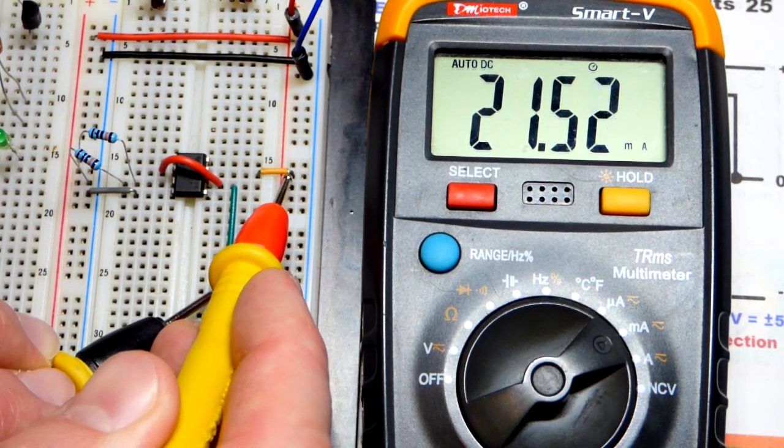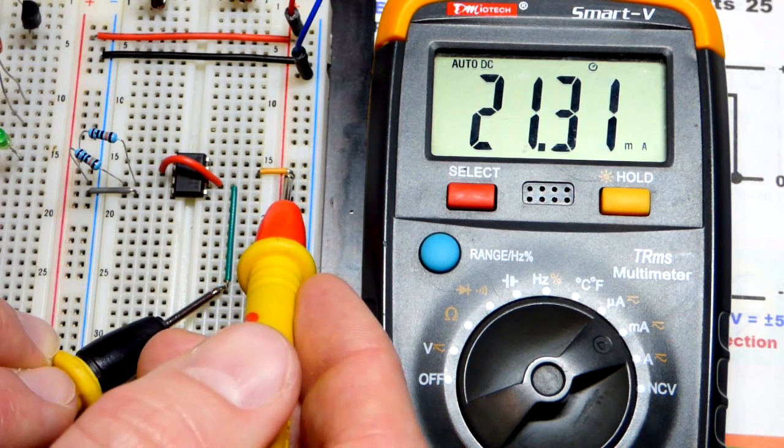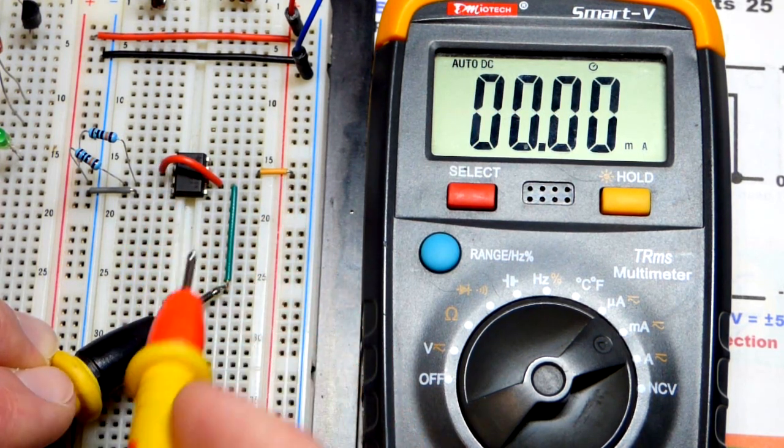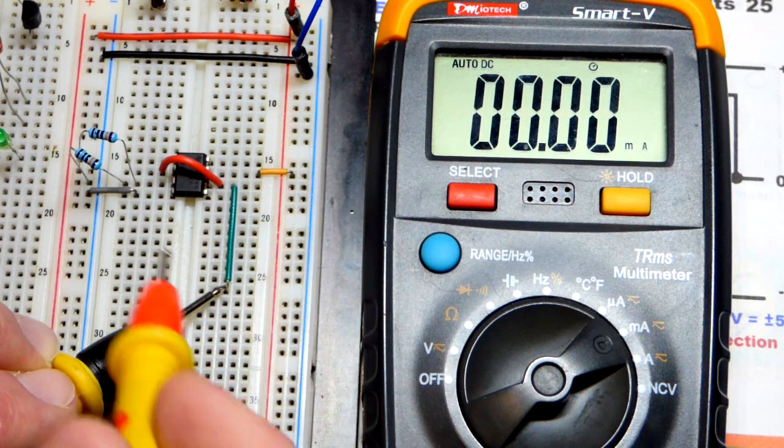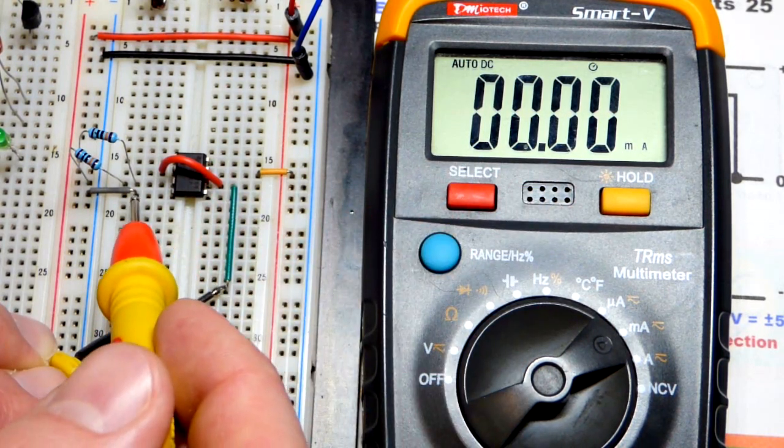You can see we had 22 milliamps. Interestingly, the current is going down. It looks like as it warms up, it actually lowers the amount of current that goes through it.